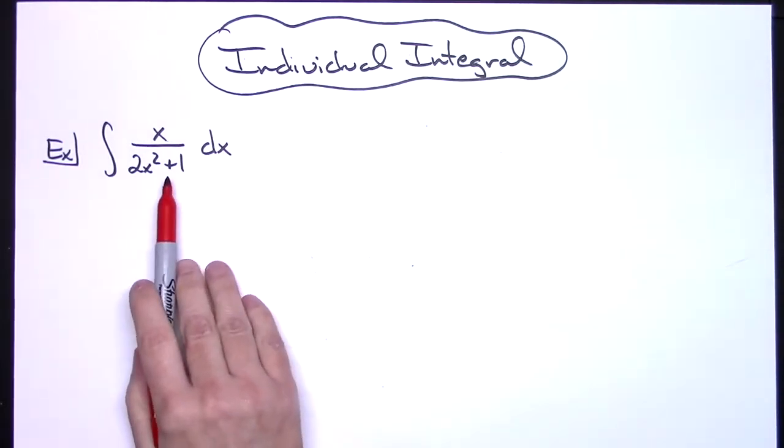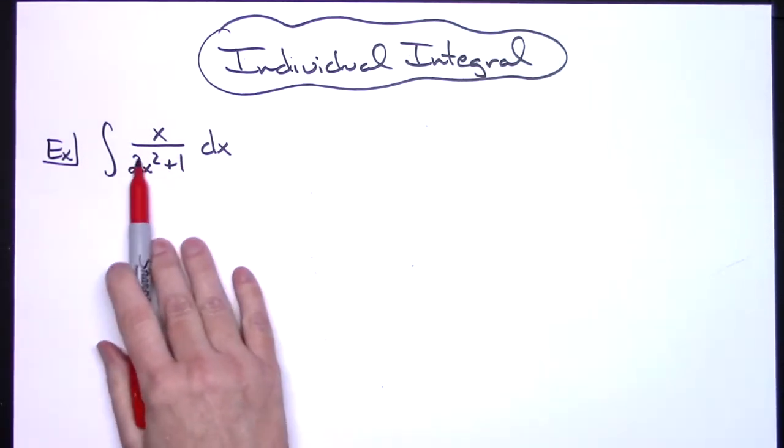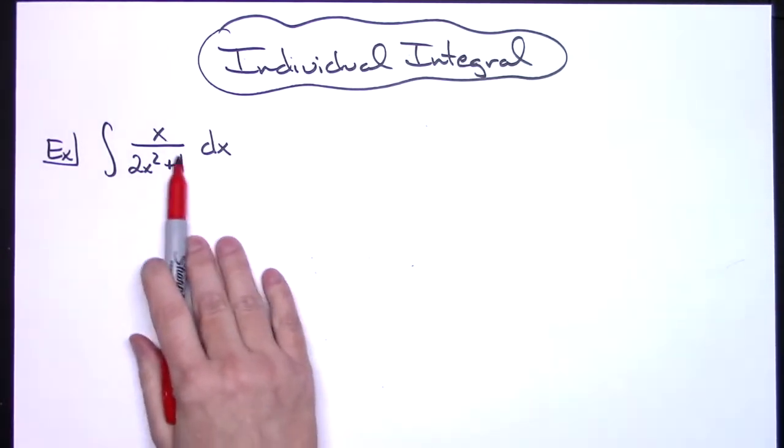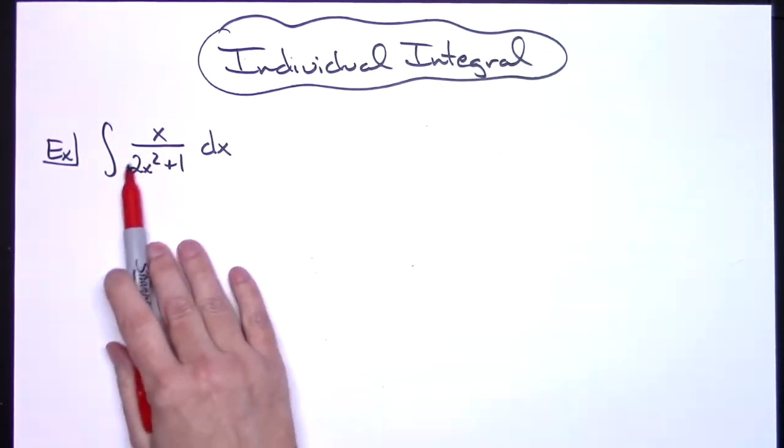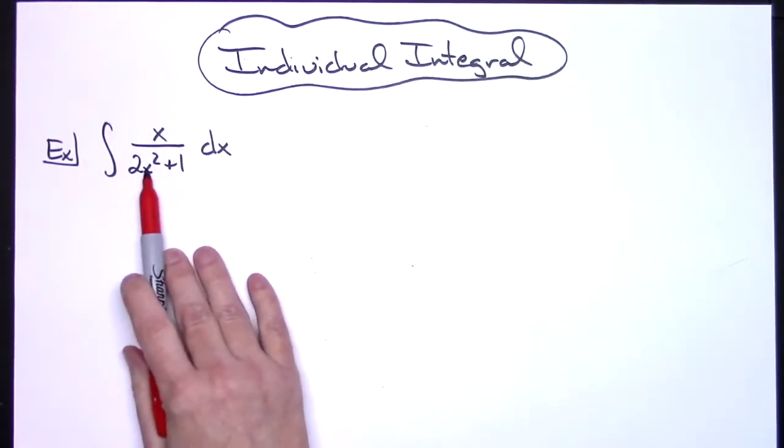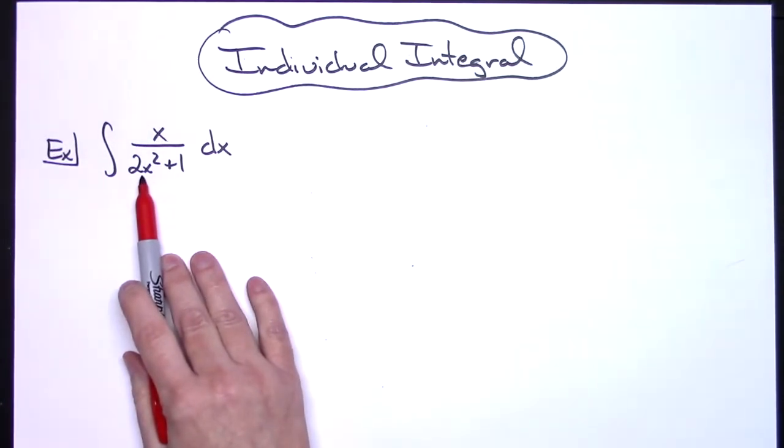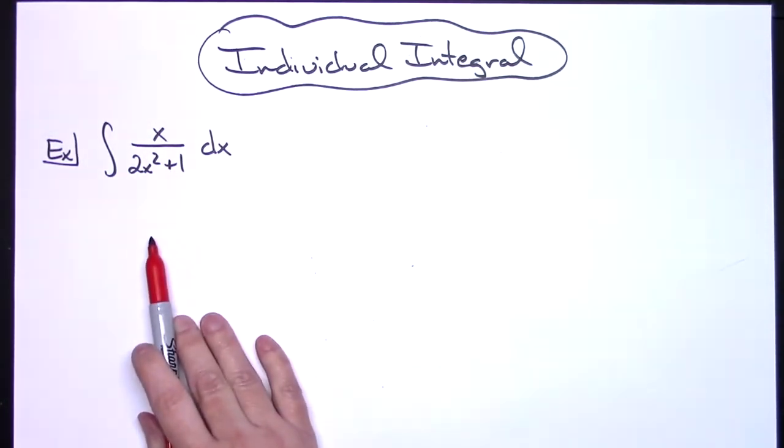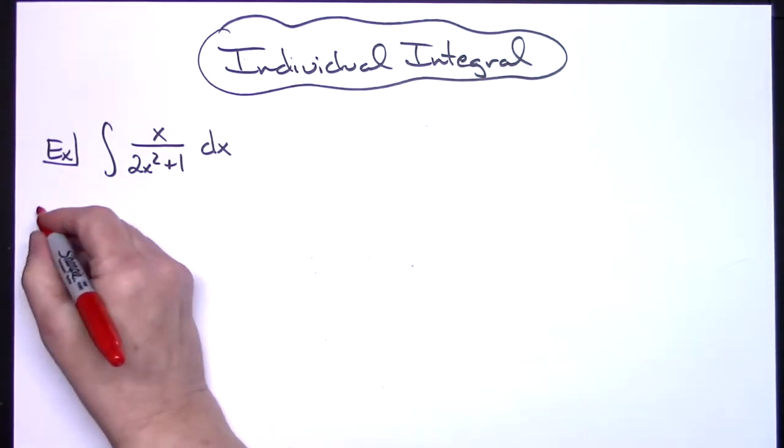First thing I'm going to do is make a decision for my u. In this case I'm going to look at this denominator and think ahead. The derivative of that 2x squared is going to be 4x, which is definitely going to allow me to cross out the x's. So that's where I'm going to start.